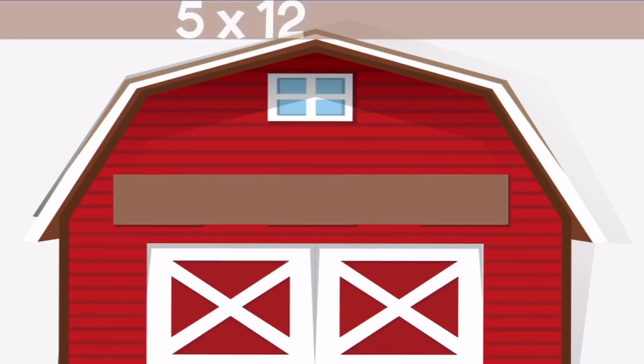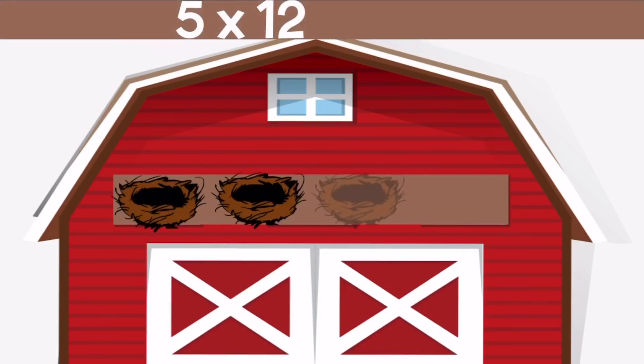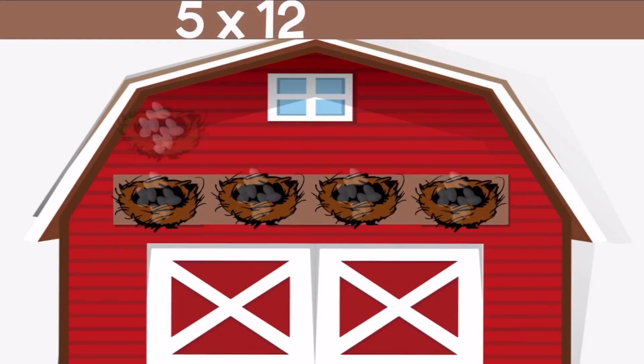5 times 12 means five nests with 12 eggs in each nest. If we count up all of the eggs we get 60 eggs.